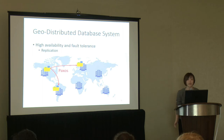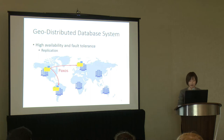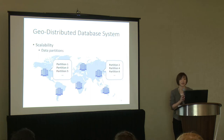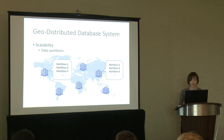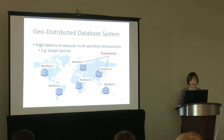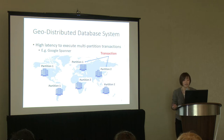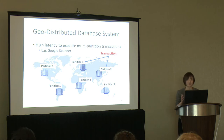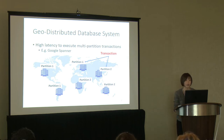These systems provide two functionalities. First is high availability and fault tolerance — the systems can use Paxos to replicate data into different data centers. They also provide scalability by sharding the data into different partitions, where each data center only stores a fraction of those partitions. However, this leads to very high latency when executing multi-partition transactions. Even though applications usually shard data such that many transactions only touch one partition, in some cases multi-partition transactions are unavoidable.